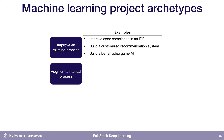Another category is augmenting a manual process — taking something that people do now and making it faster or easier for them to do it. For example, turning sketches into slides. Maybe our team makes a lot of slides and we want to build a system that will allow them to sketch it and then have it automatically get 80% of the way there.